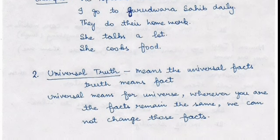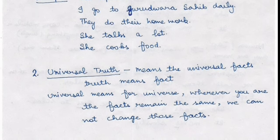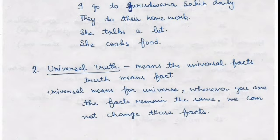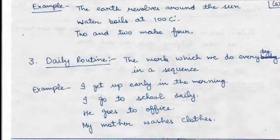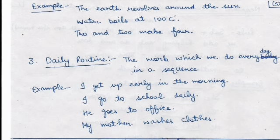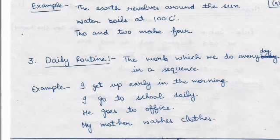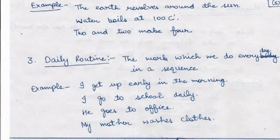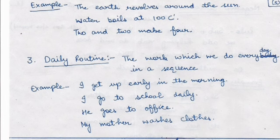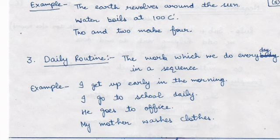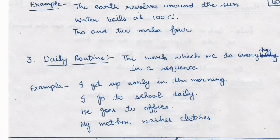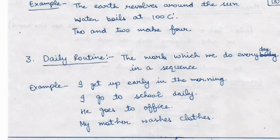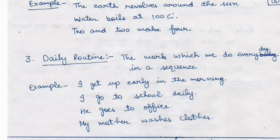The second use is to express universal truth — any fact that holds for the whole universe. These facts remain the same wherever you are and we cannot change them. For example, 'the earth revolves around the sun' — we cannot change it to 'the earth revolved around the sun' using the second form. More examples: 'water boils at 100 degrees Celsius', 'two and two make four'.